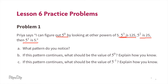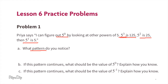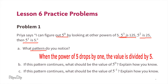I can figure out five to the power of zero by looking at other powers of five. Five to the power of three is 125, five to the power of two is 25, then five to the power of one is five. Part a: What pattern do you notice? I notice that when a power of five drops by one, the value is divided by five. For example, 125 divided by five is 25, and 25 divided by five is five.